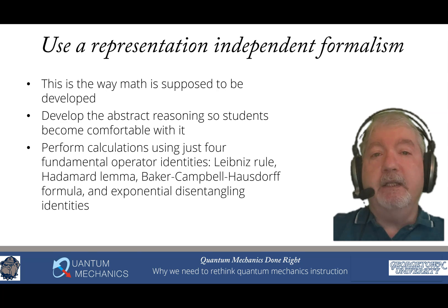And finally, we perform all of our calculations using just four fundamental operator identities. The Leibniz product rule for commutators, the Hadamard lemma, the Baker-Campbell Hausdorff formula, and the exponential disentangling identity. Those of you who've taken quantum mechanics before have probably heard of the first three, but most, unless you work in quantum optics, have not heard of the fourth. And the fourth is critical to be able to have a full suite that allows you to actually do things using an operator-based approach.